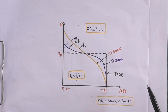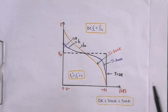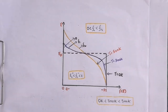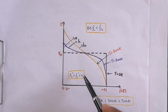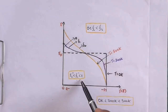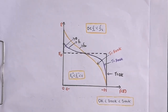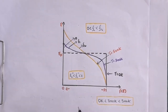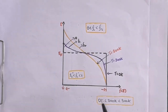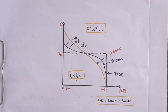We can understand this in the context of semiconductors: as we increase the temperature, electrons in the valence band move towards the conduction band. This is what the Fermi-Dirac distribution function tells us. Thank you for watching — please like and subscribe for more videos.